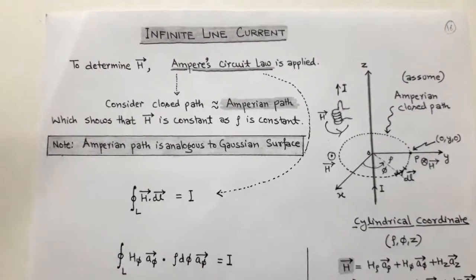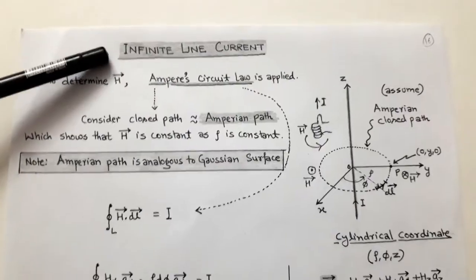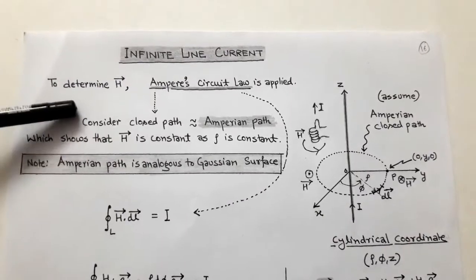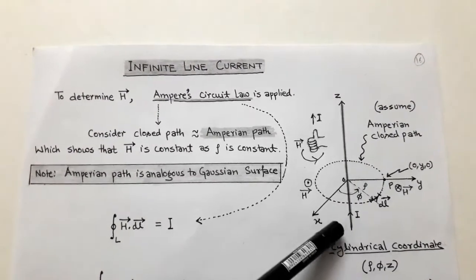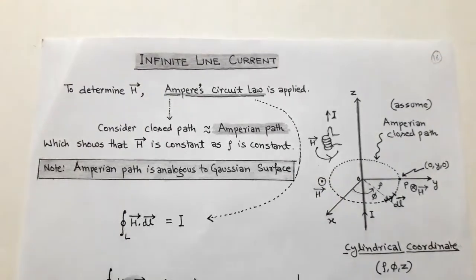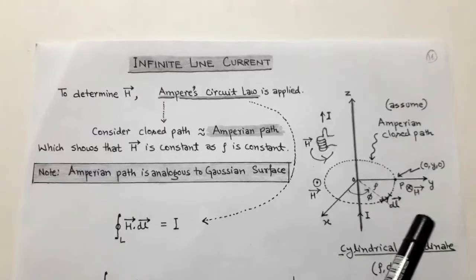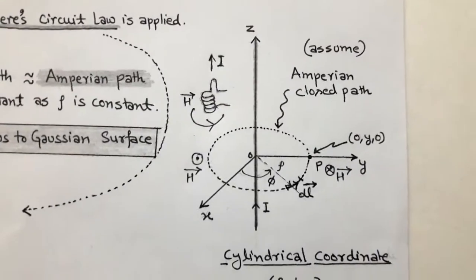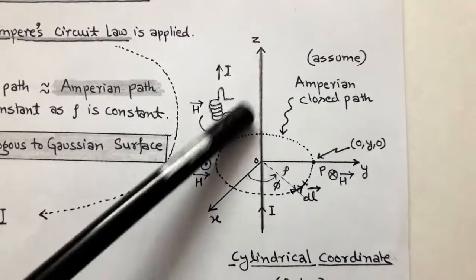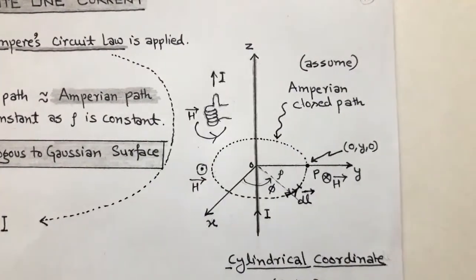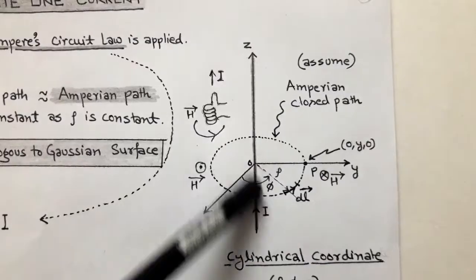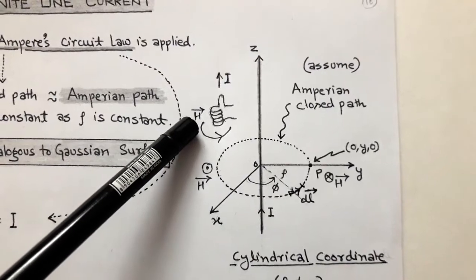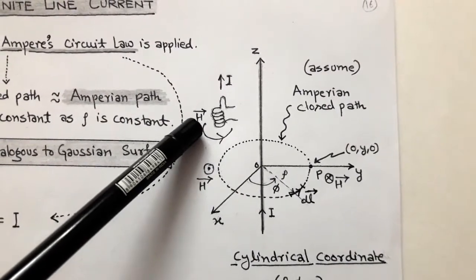The first case is infinite line current, and we have to determine the magnetic intensity H at any point using Ampere's circuit law. Since this is a line having infinite dimensions, the current distribution is symmetrical, so we apply Ampere's circuit law. We consider an infinite conductor which carries a current I in the positive z-direction. As the current I is a DC or steady current, there is a magnetic field surrounding this conductor and the direction of the magnetic field is given by the right-hand rule.